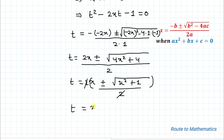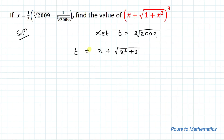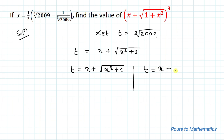So we get t equals x ± √(x² + 1). We have taken t equals the cube root of 2009, so let's substitute back.